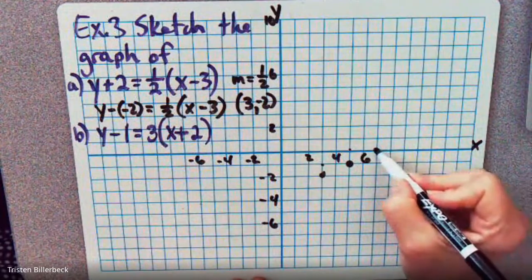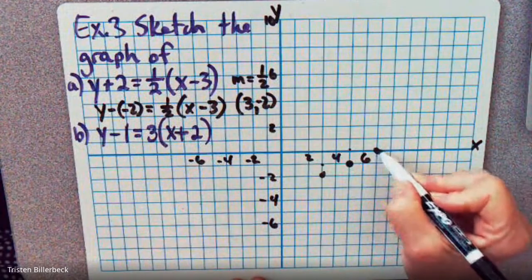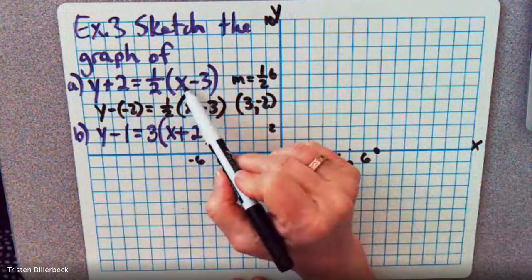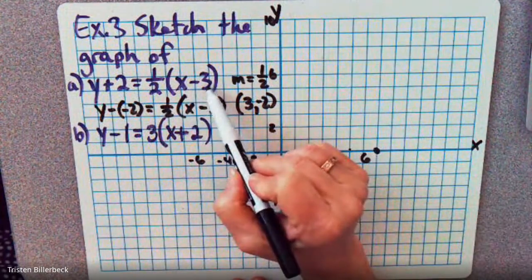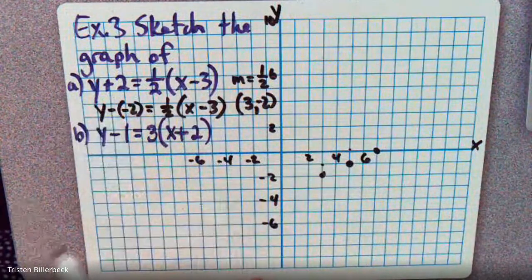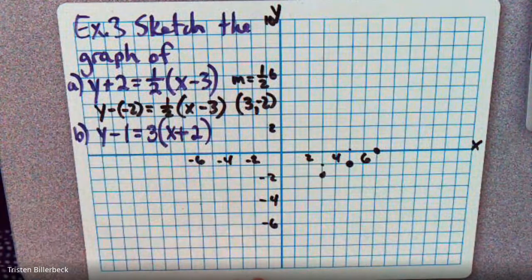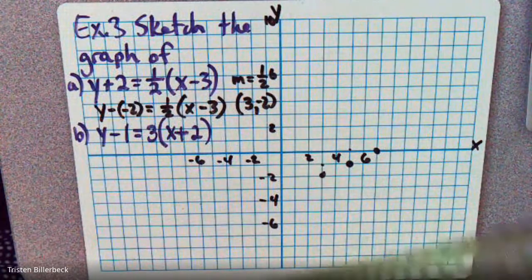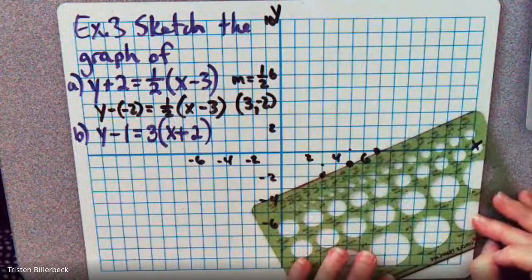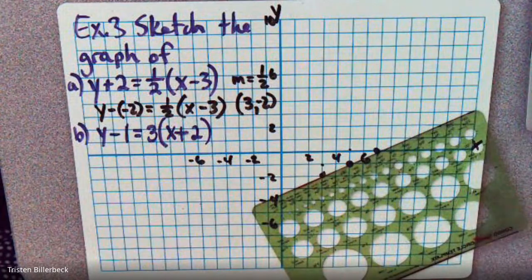So what that says is that (7, 0) works. 7 minus 3 is 4, half of 4 is 2, and 0 plus 2 checks out. So that point definitely is there. So we can graph this one with that slope.